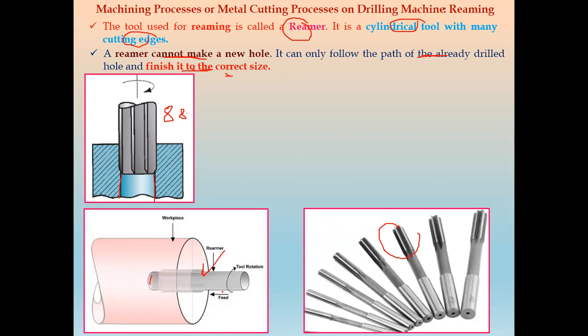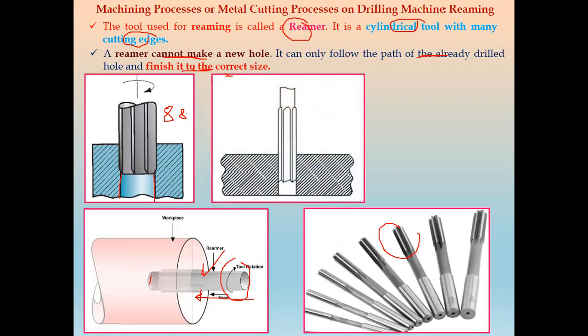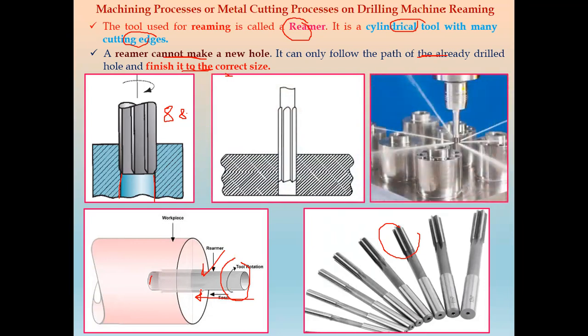In reaming, the tool is rotating and fed against the stationary workpiece. The reamer tool is used for the reaming operation and it only follows the drilled hole path, finishing it to the correct or desired size. In drilling, surface finish is less, but in the reaming process, surface finish is much higher.